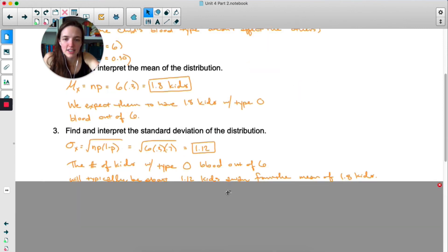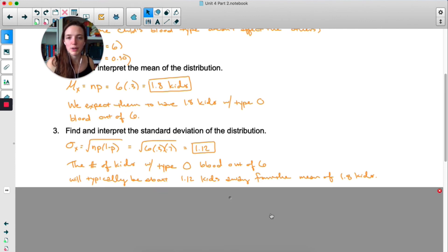For the standard deviation, once again, we can use our shortcut, n times p times 1 minus p, and then square root all that, we get 1.12. So the number of kids with type O blood out of six will typically be about 1.12 kids away from the mean of 1.8 kids. Once again, we've got context. We're talking about type O blood and kids.